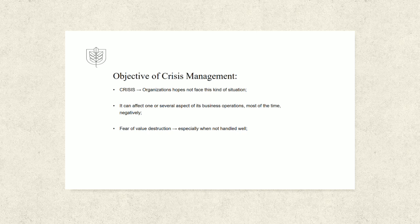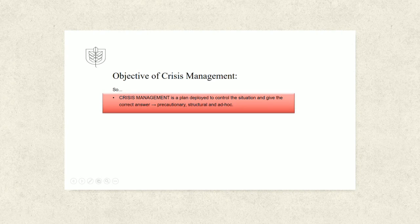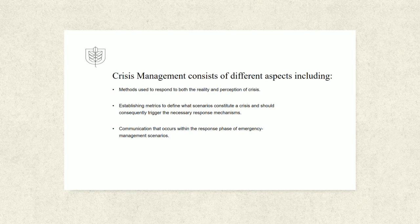Most of the time, negatively. Substantial value destruction is to be feared, especially when the crisis is not handled well with the media or public opinion. We can define crisis management as a plan deployed to control the situation and give the correct answer to each and every stakeholder involved — precautionary, structural and ad hoc. Crisis management consists of different aspects including methods used to respond to both the facts of a crisis and the perception from each stakeholder, establishing metrics to define what scenarios constitute a crisis and how they will trigger the necessary response mechanisms, and communication that occurs within the response phase of emergency management scenarios.